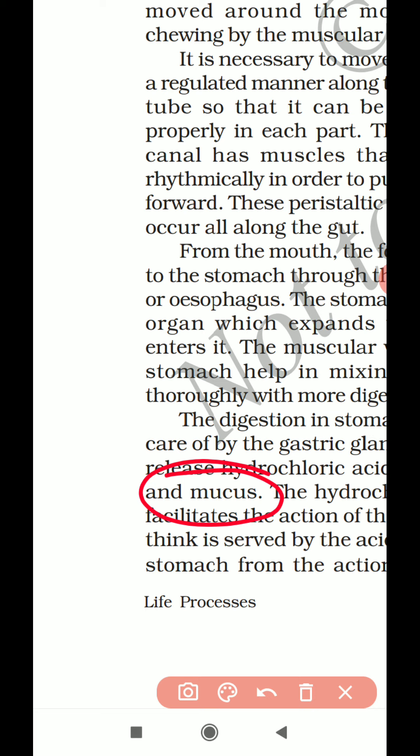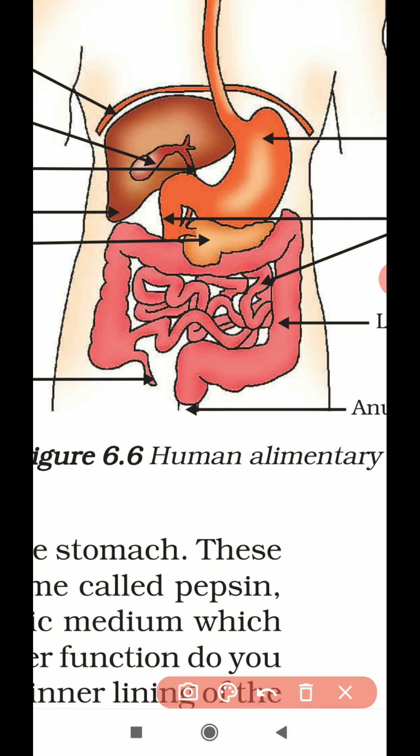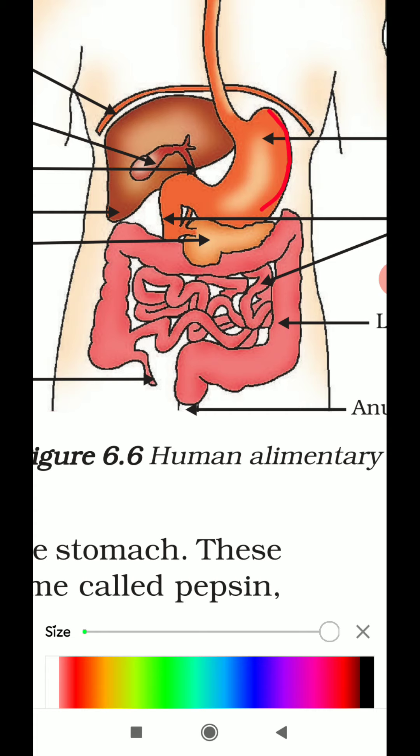Thirdly, we have mucus, which has a very important role — it protects the inner lining of the stomach. Because hydrochloric acid creates an acidic medium, this acidic medium should not react with the inner lining of the stomach. Under normal conditions, if it does react, we can feel a burning sensation in the stomach. So the mucus secreted from the gastric glands protects the stomach wall.